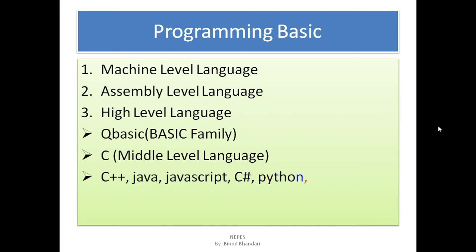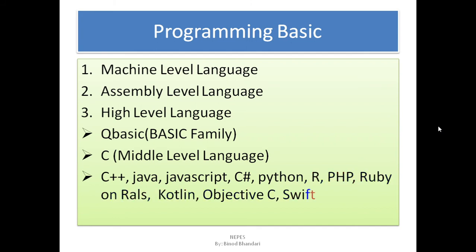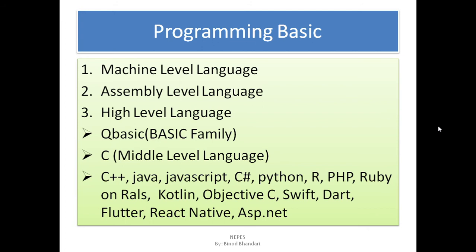Other high-level languages include C++, Java, JavaScript, C Sharp, Python, R, Ruby, PHP, Kotlin, Objective-C, Swift, Dart, Flutter, React Native, and ASP.NET. These are all high-level languages and are among the most important and mostly used languages in the present era.